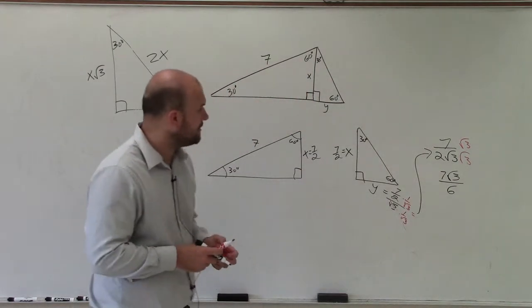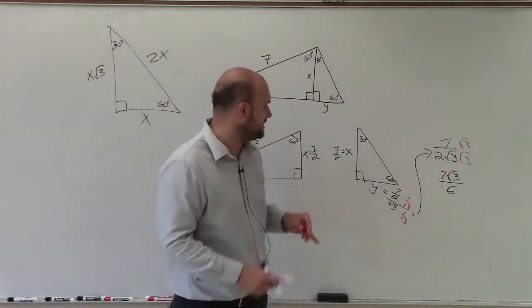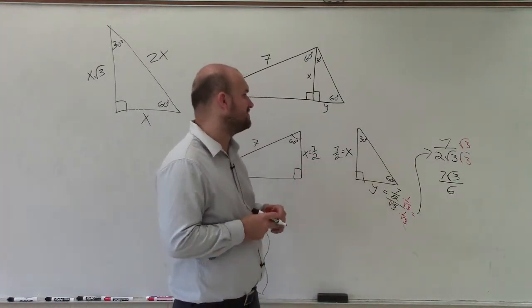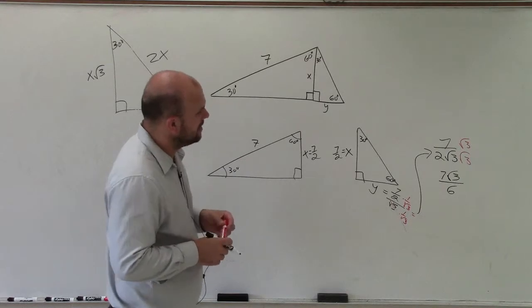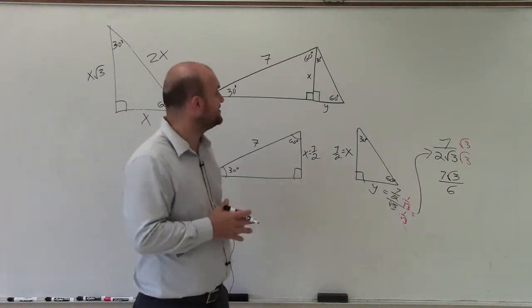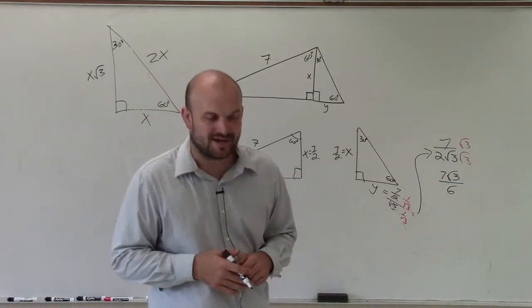So therefore, ladies and gentlemen, of this special triangle, our x value is 7 over 2, and our y value is 7 square root of 3 divided by 6. There you go, ladies and gentlemen. And that is how you determine your sides of your triangle.